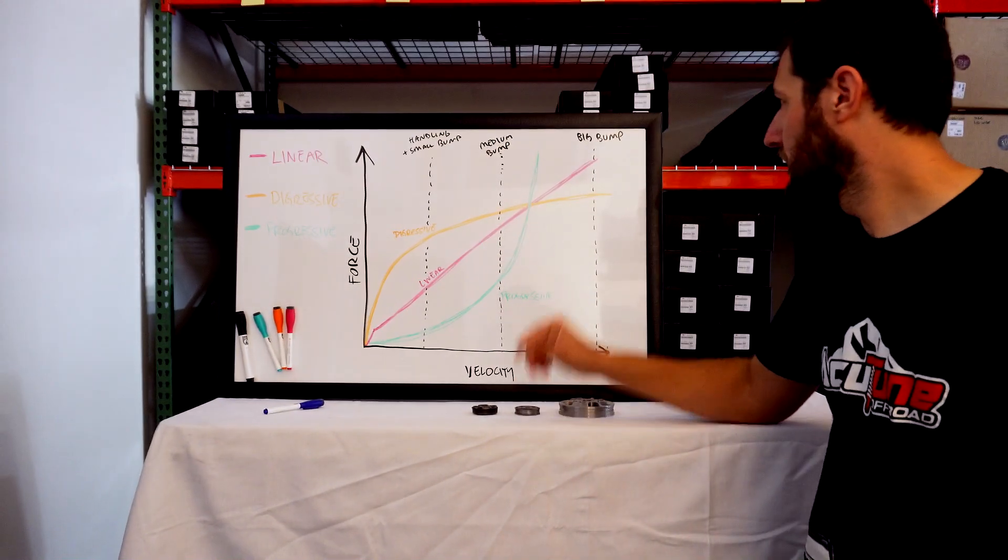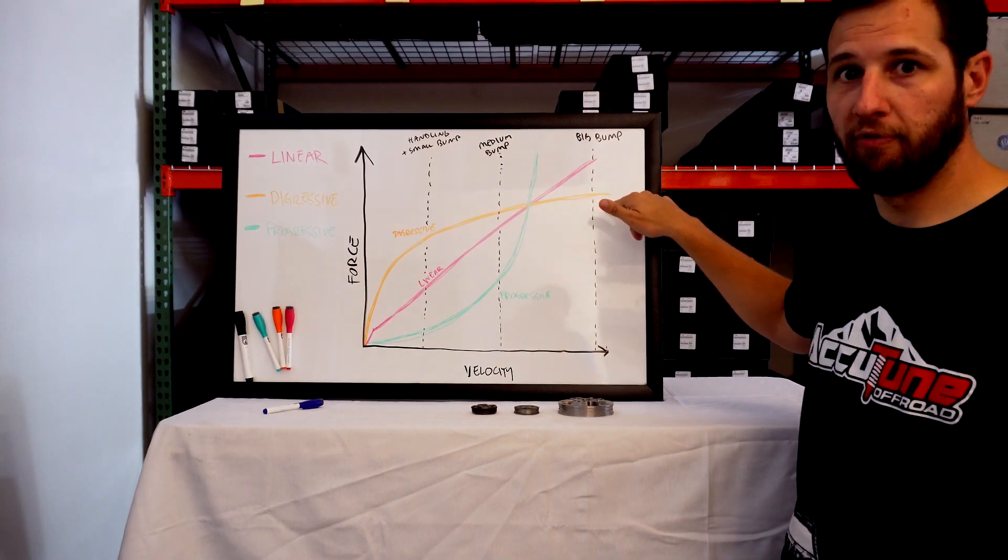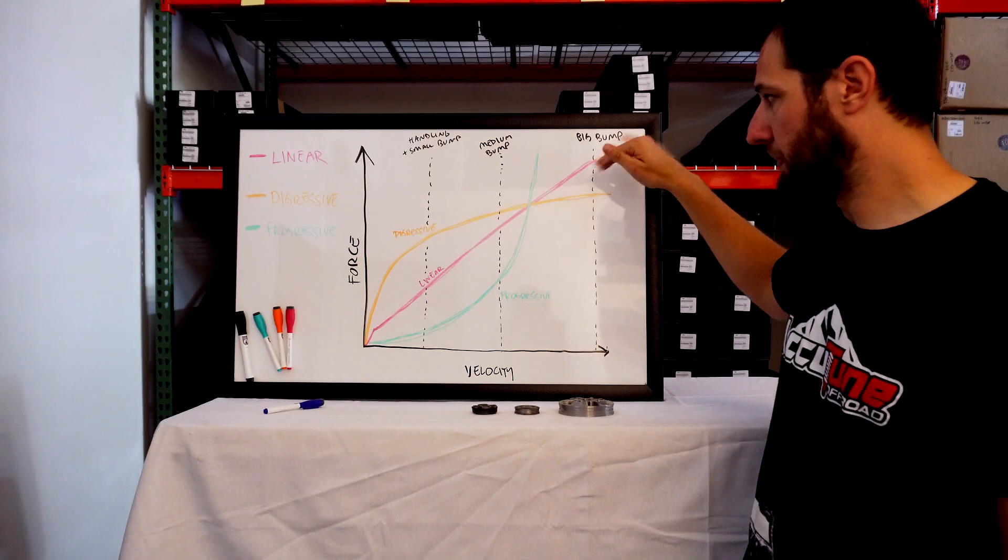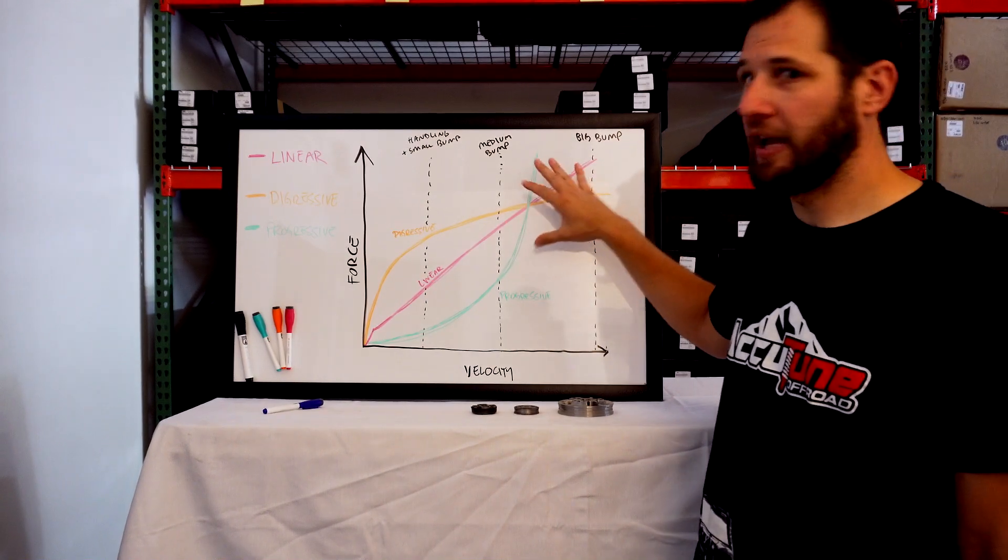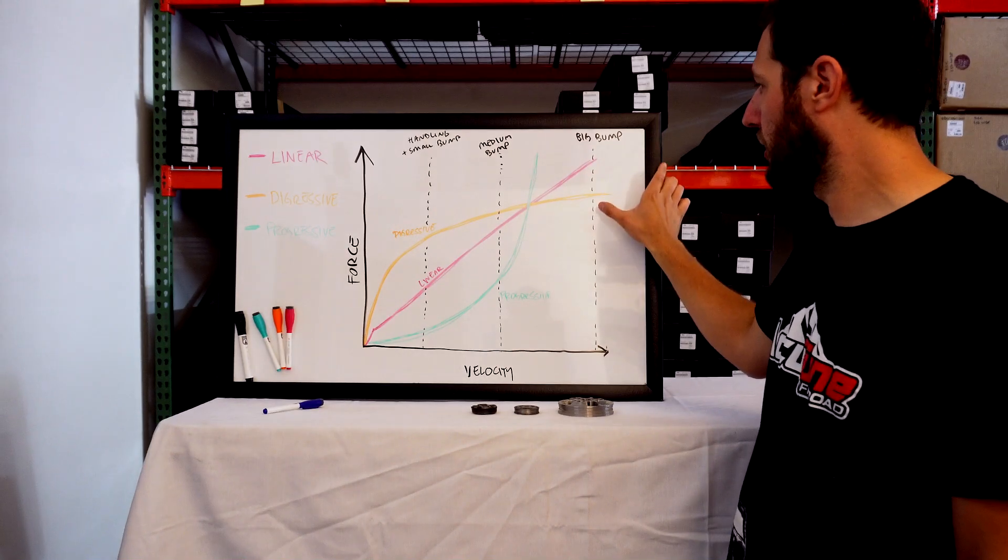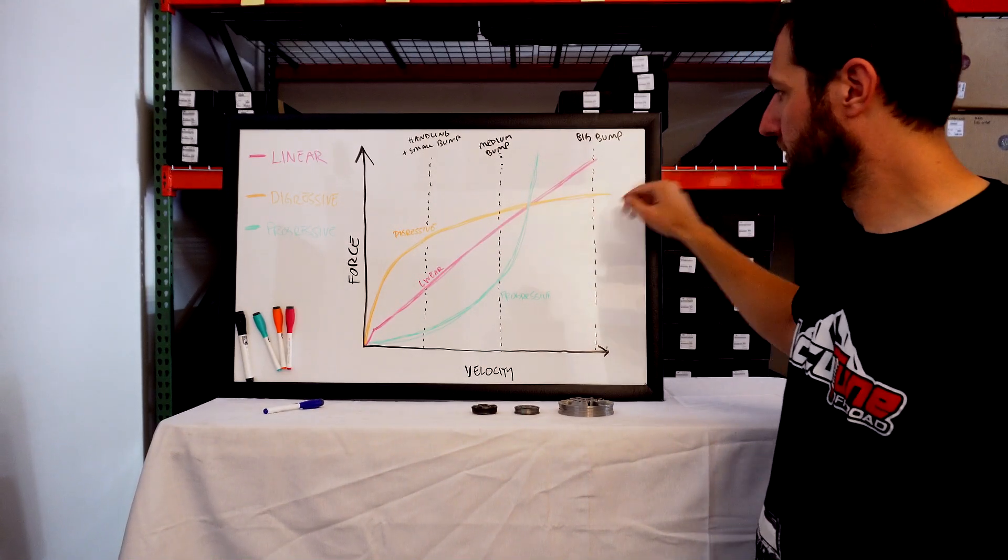It'll blow through the travel and we need that stiffer zone to make up for being so soft down here. Then finally, on a large bump, the digressive tends to blow off load and might actually be softer. Linear is your typical response, and progressive, again, depends on how it's tuned.